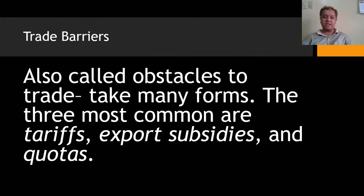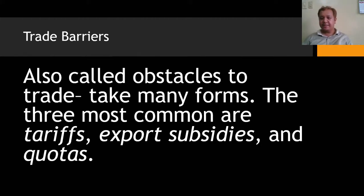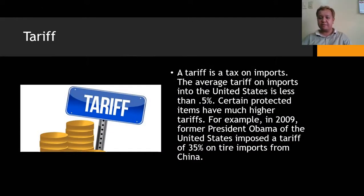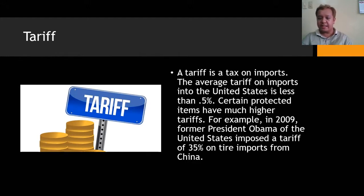Trade barriers — also called obstacles to trade — take many forms. The three common trade barriers are tariffs, export subsidies, and quotas. Starting with tariffs: the average tariff on imports into the United States is less than 0.5 percent, though certain protected items have much higher tariffs. For example, in 2009, former President Barack Obama imposed a tariff of 35 percent on tires imported from China.